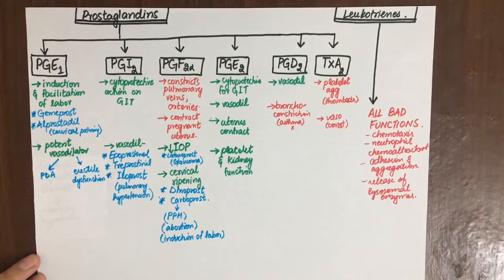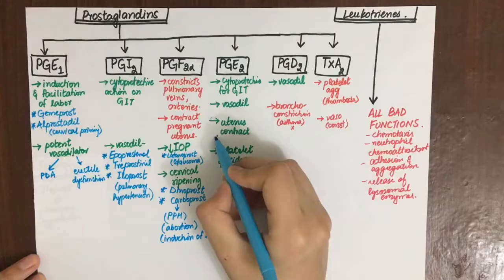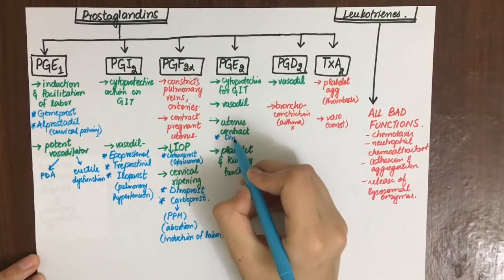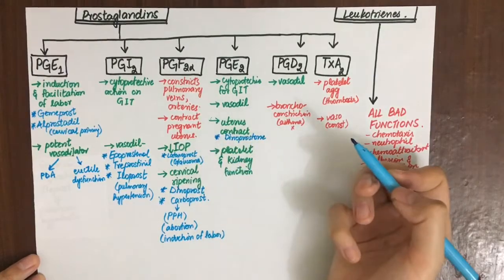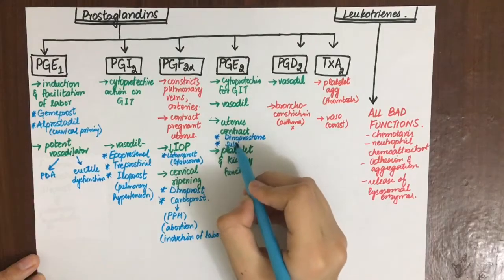PGE2: dinoprostone and sulprostone can be used to contract the uterus, same reasons as PGF2-alpha was used for - abortion and induction of labor.